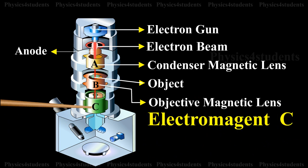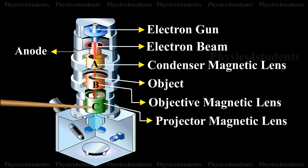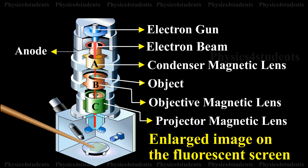The electromagnet C, i.e., the projector magnetic lens focuses the electron beam from the part of the enlarged image on the fluorescent screen producing still greater magnification.